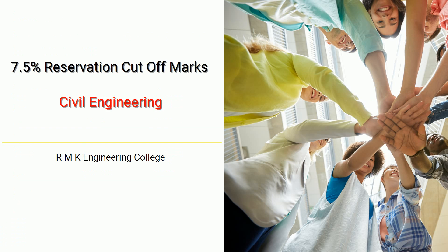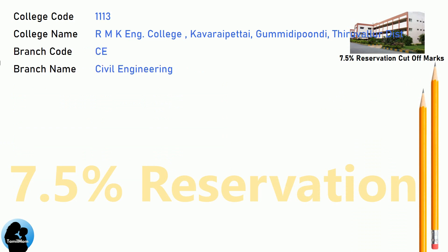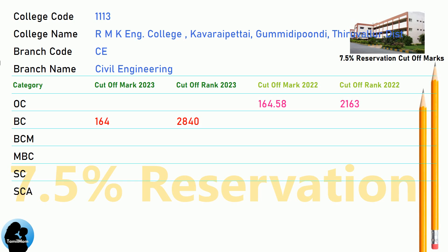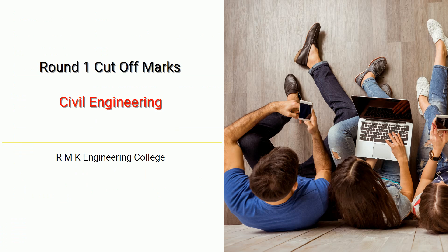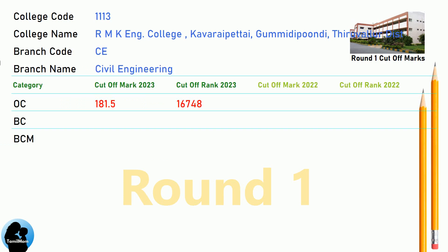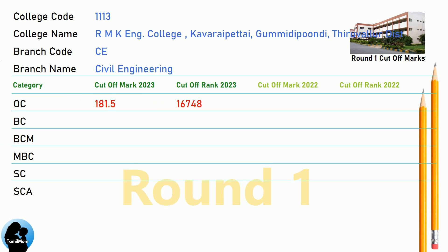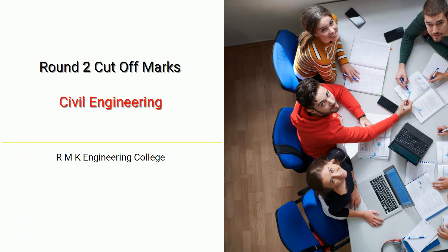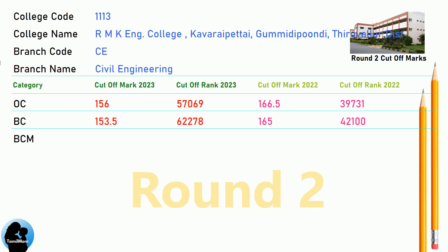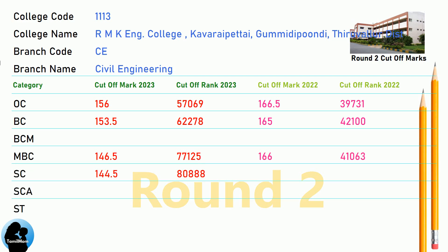DNA 7.5 Reservation Cut-Off for RNK Engineering College in Civil Engineering. DNA Round 1 Cut-Off for RNK Engineering College in Civil Engineering. RMK Engineering College in Civil Engineering DNA Cut-Off.